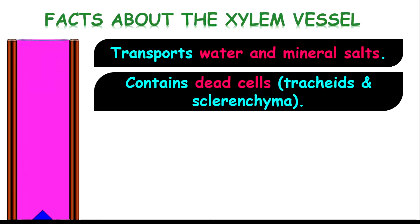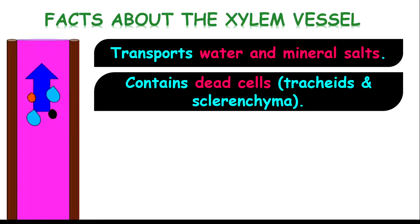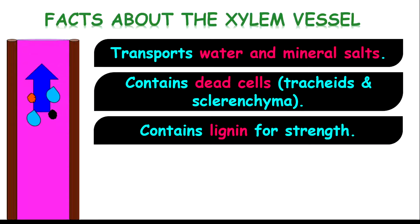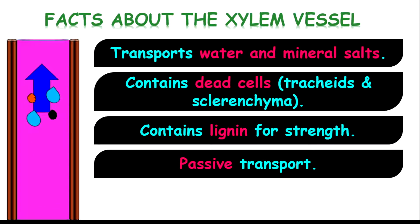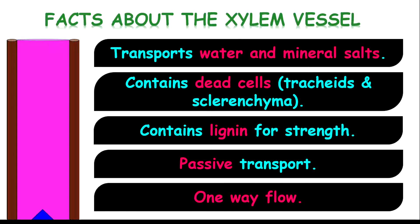You also have the sclerenchyma, which are dead when mature. They are the structures that contain lignin, giving strength to the walls of the xylem. The transport that takes place inside the xylem is passive transport, meaning there is no need for energy for the movement of water and mineral salts. There is a one-way flow — substances flow from the roots towards the leaves of the plant.